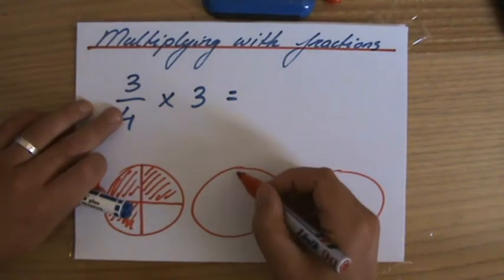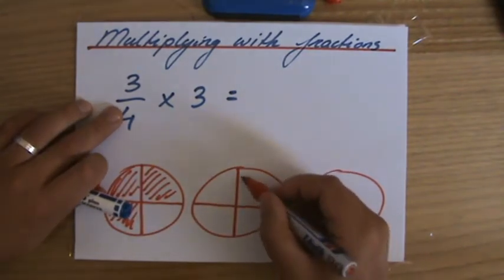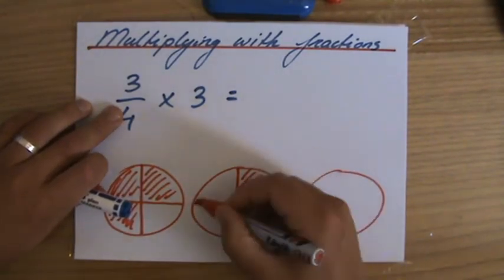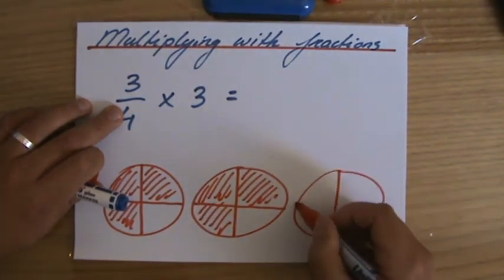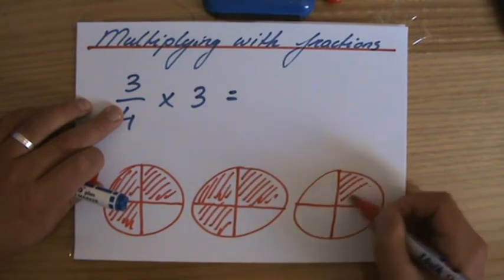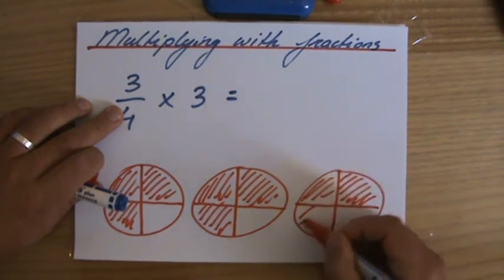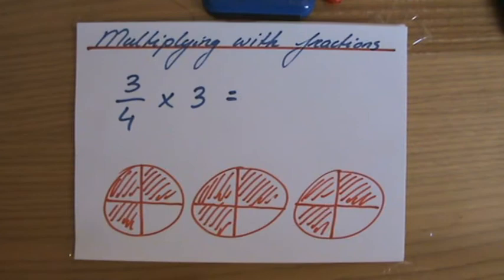That's 1 times 3 quarters. I have another pizza in a different flavor. I have 3 quarters of that one. And I'll have a margarita as well. And I'll have 3 quarters of that pizza. 3 times 3 quarters.